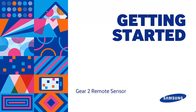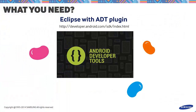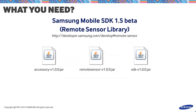We'll start off by gathering all the things we need to develop a Remote Sensor application with Gear 2. Make sure to have Eclipse with Android development tools installed. Make sure to have updated until the Jellybean packages. Jellybean is the minimum requirement to use Samsung Remote Sensor. We also need the following JAR files, which will be used to introduce Remote Sensor to the device. These files can be found in the Samsung Mobile SDK 1.5 beta archive file.